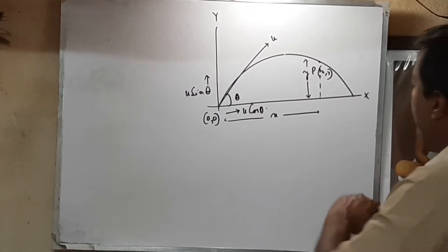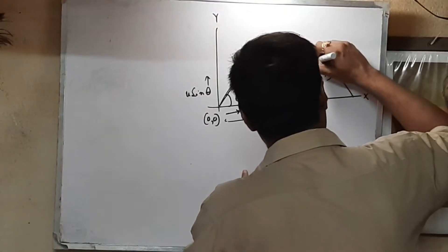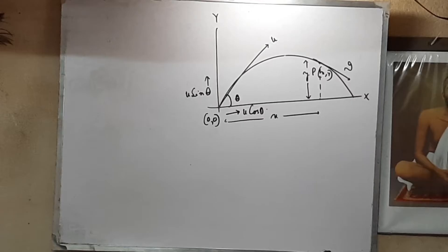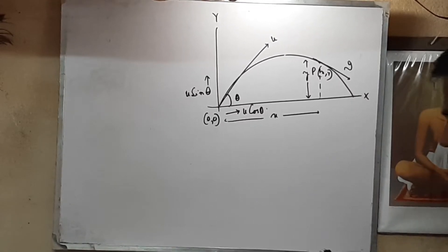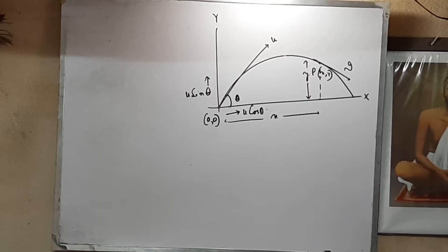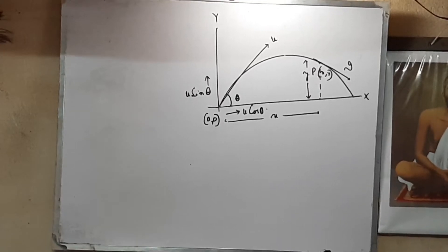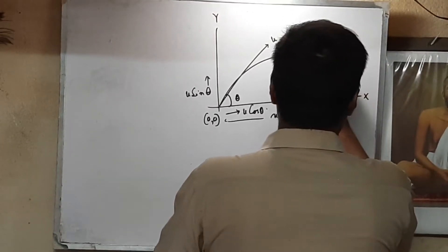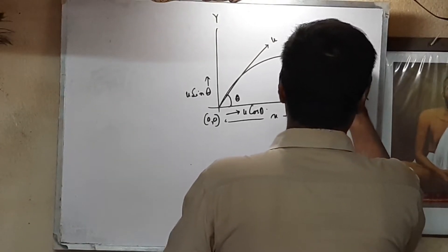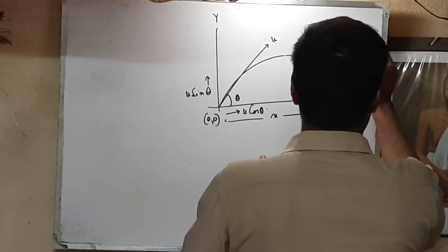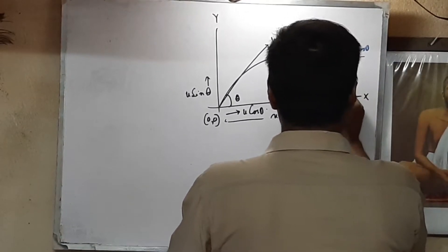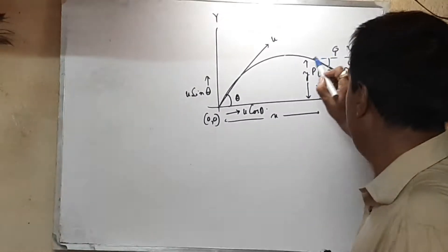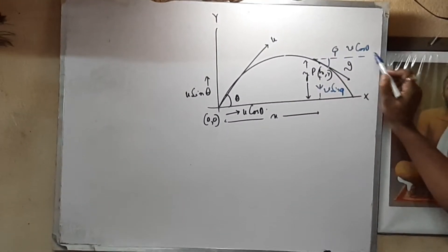After t seconds the body reaches point P, and right at point P the instantaneous velocity of the projectile is v. This velocity v can also be resolved into two components. Let this angle be phi; so along the horizontal direction it will be v cos phi, and along the vertical direction it will be v sin phi.